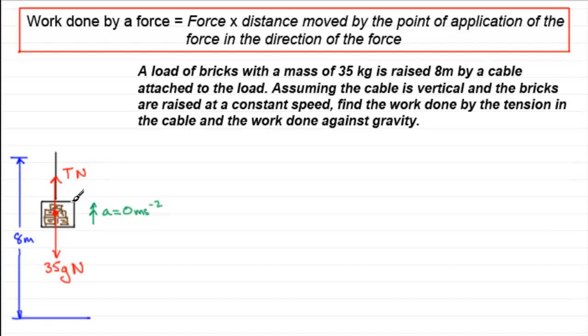Now in order to get the work done by the tension in the cable, T newtons, it will be the force of T newtons times the distance it moved, which was 8 m. So we can just write that down here, that the work done by the tension is going to equal T, the force, times 8. In other words, 8T.